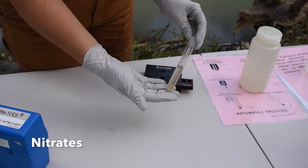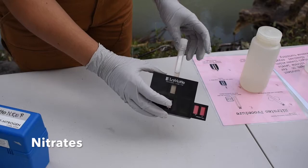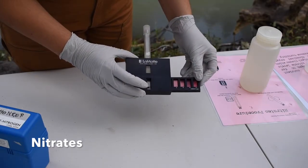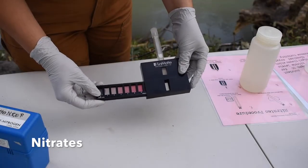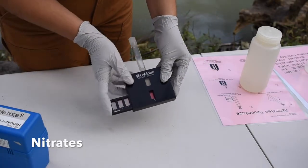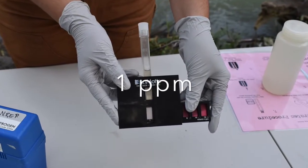After 5 minutes has passed, we remove the tube from the sleeve and slide it into the octaslide viewer. We then move the slider until we find a color that matches our sample. This sample matches the color that corresponds with a nitrate value of 1 part per million.